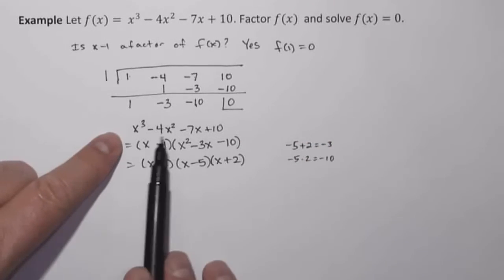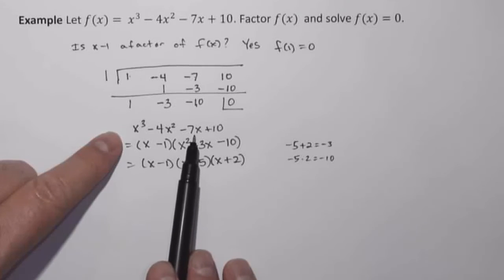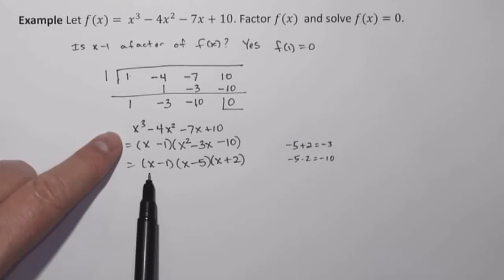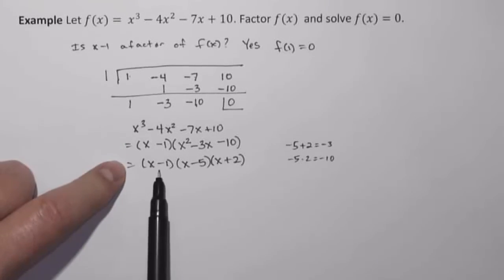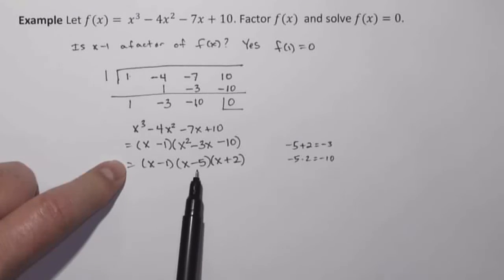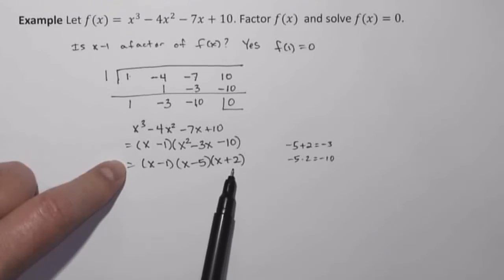So that factors into x minus 5 times x plus 2. So I now have factored x cubed minus 4x squared minus 7x plus 10 completely. f of x factors into x minus 1 times x minus 5 times x plus 2.